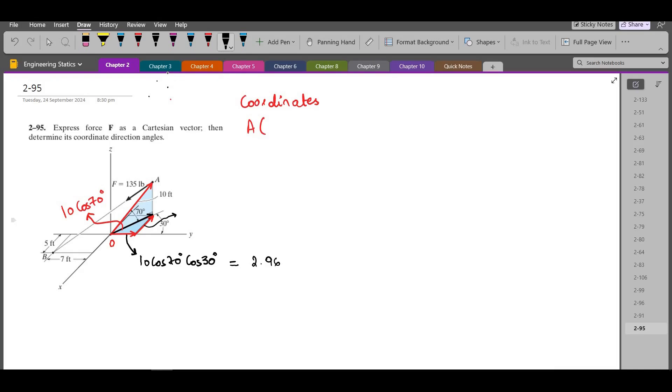And this component, the x component is 10 cos 70 into sin 30, and it can be simplified to 1.71. Why we have this 30 degrees angle? Because this angle right here is also 30 degrees.